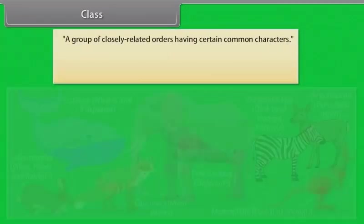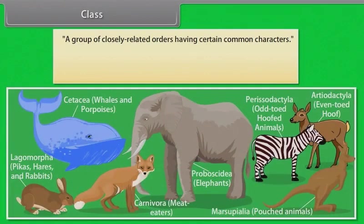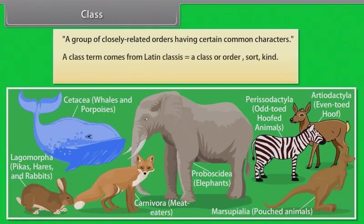Class is a group of closely related orders having certain common characters. The term class comes from Latin classis, meaning a class or order, sort, or kind. An example is class Mammalia.